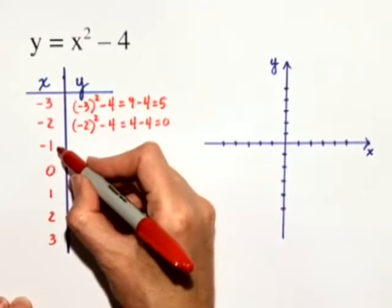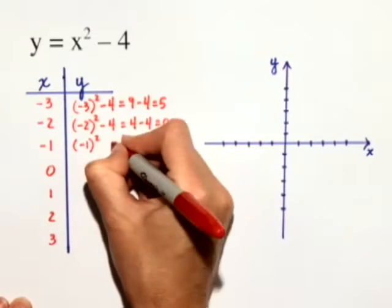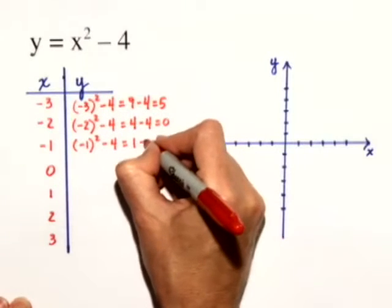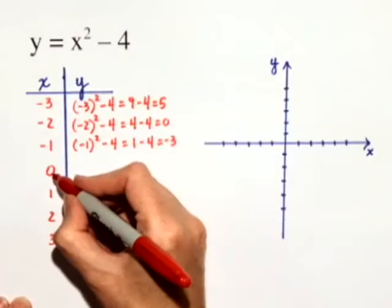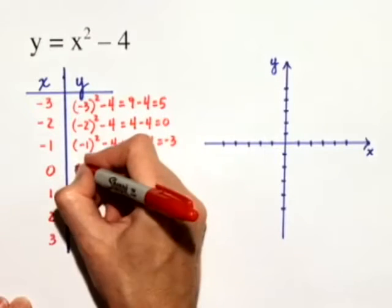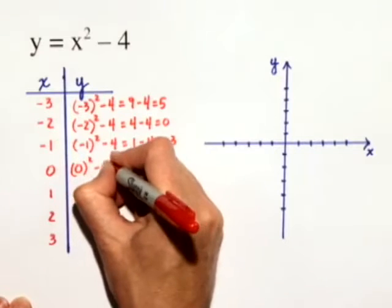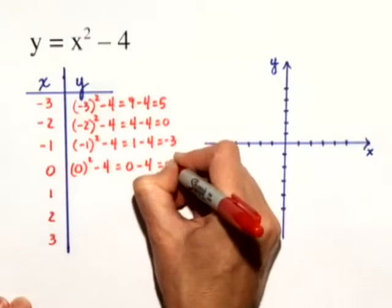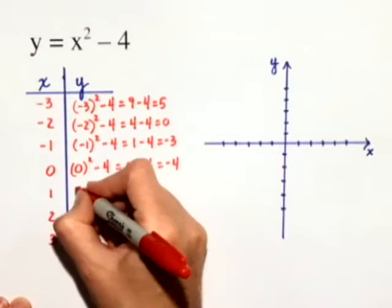Let's substitute negative 1 for x. y will equal negative 1 quantity squared minus 4, which just gives us 1 minus 4, or negative 3. Substituting 0 in for x, we get y equals 0 squared minus 4, which is just 0 minus 4, or negative 4.